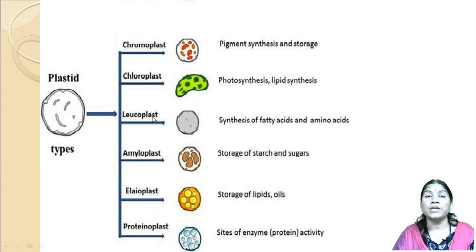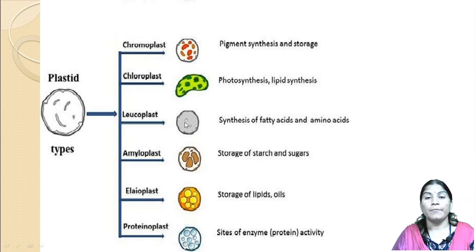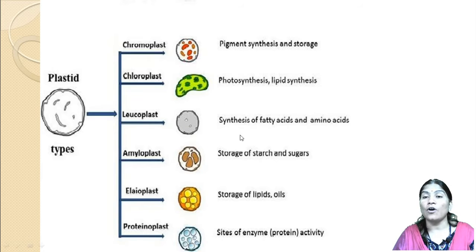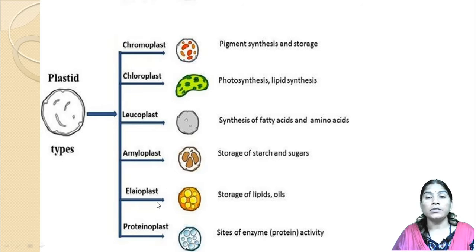The next type of plastid is leukoplast. In these cells, there is no color — they are colorless due to the absence of pigment. Leukoplasts are always pigment-free. They play an important role in the synthesis of fatty acids and amino acids. Amyloplasts, elaioplasts, and proteinoplasts are subtypes of leukoplasts.